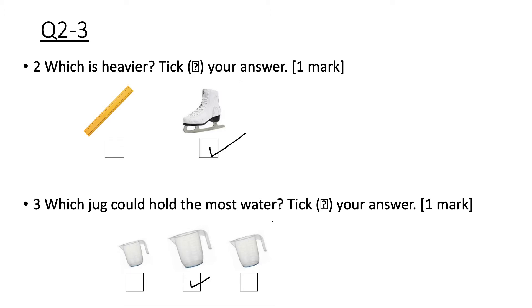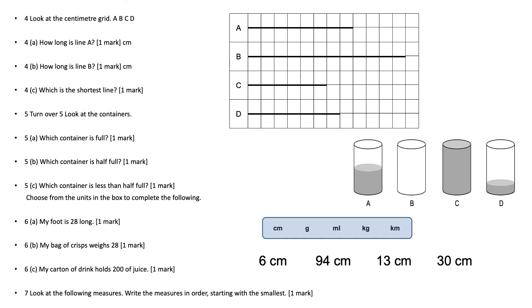Question number four, look at the centimeter grid A, B, C, D. How long is line A? Well each square is one centimeter so it's one, two, three, four, five, six, seven, eight. So the length of A is eight centimeters.